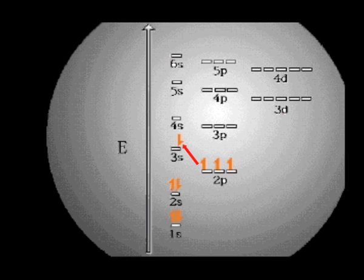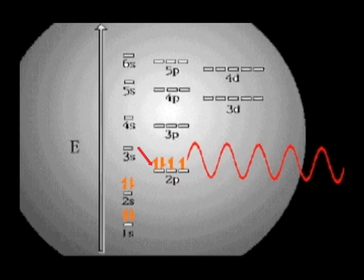It now has more energy. This is its excited state. When it drops back down to its ground state, it releases energy, in this case red light.